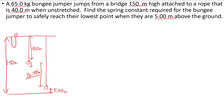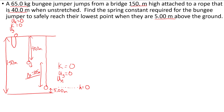Let's think about the energies. At the very top, the rope is not stretched so there's no elastic potential energy, and we're not moving so there's no kinetic energy — all energy is gravitational potential. At the bottom, I'll choose h equals 0 at the lowest point, 5 meters above the ground, so there's no gravitational potential energy there. We're also at a stop, so no kinetic energy. The only energy at the bottom is elastic potential energy, and we can use conservation of energy to find the spring constant.